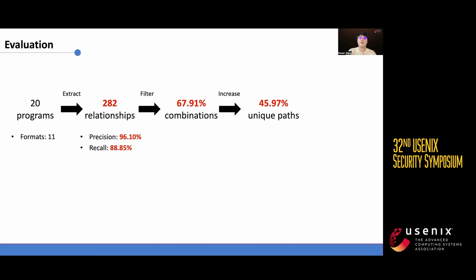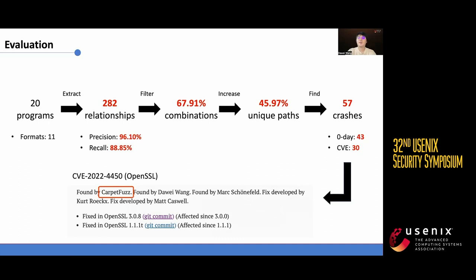Throughout the evaluation, Copy the Fuzz uncovered a total of 57 crashes, with 43 being zero-day vulnerabilities, out of which 30 have been assigned CVE IDs. Notably, Copy the Fuzz identified a critical vulnerability in OpenSSL and received acknowledgement for its contribution.